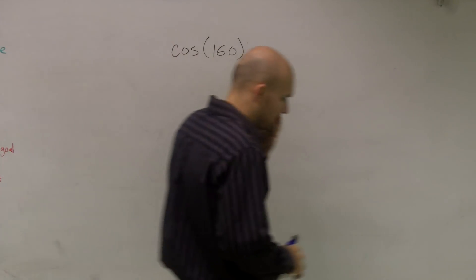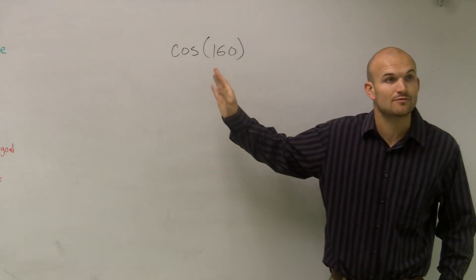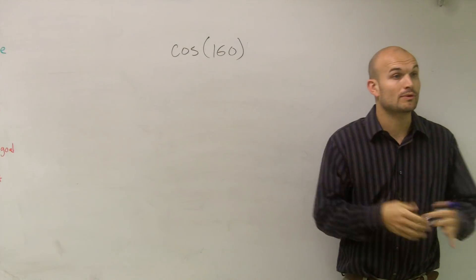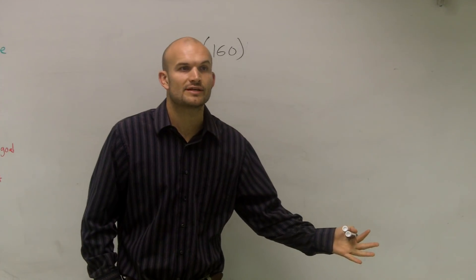Alright, so for this problem, what I'm going to show you is how to solve for an angle, the cosine of 160. Now remember, when we're using our unit circle, it was easy for us to determine the cosine of 60 degrees, right?